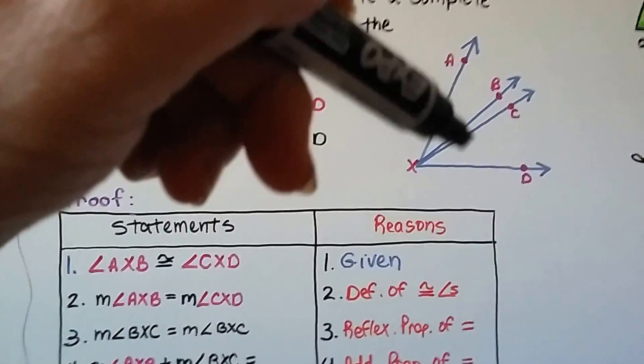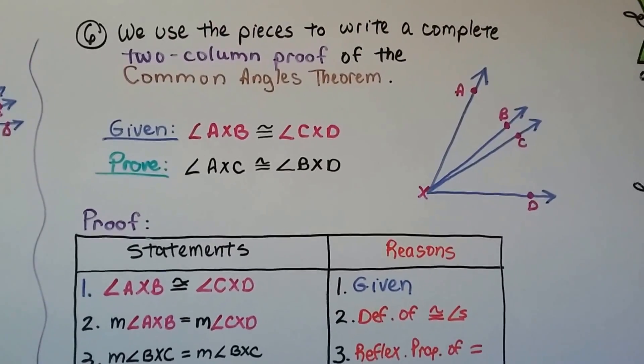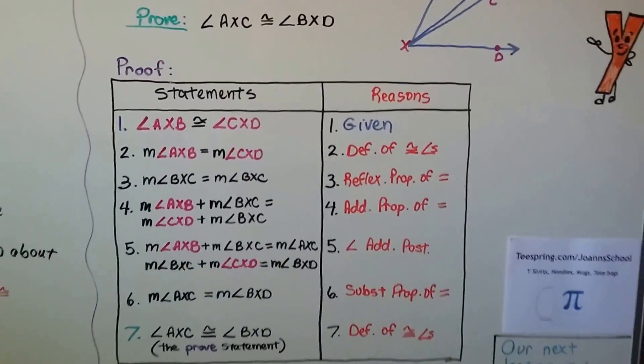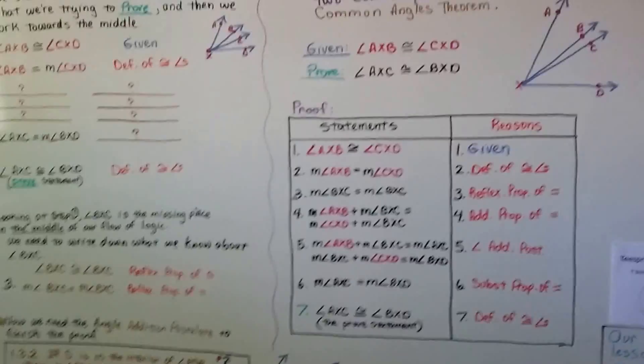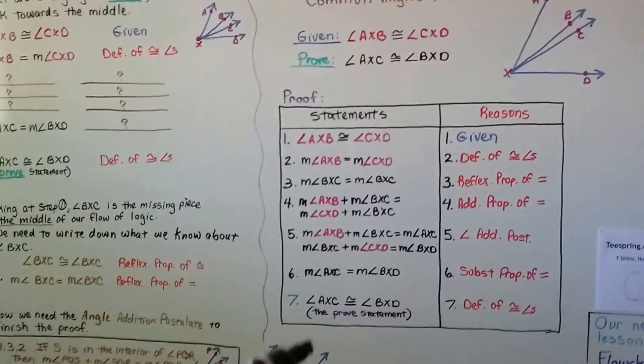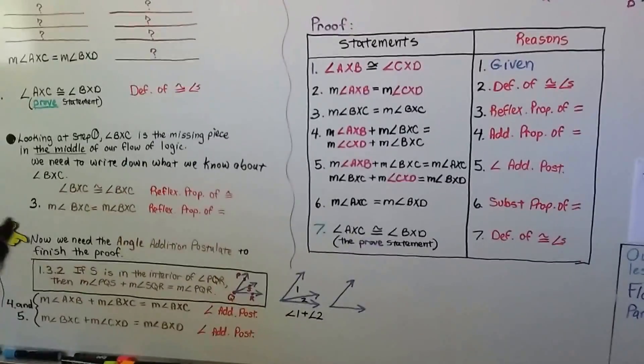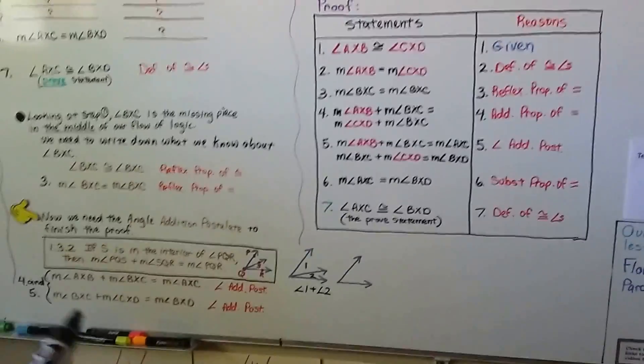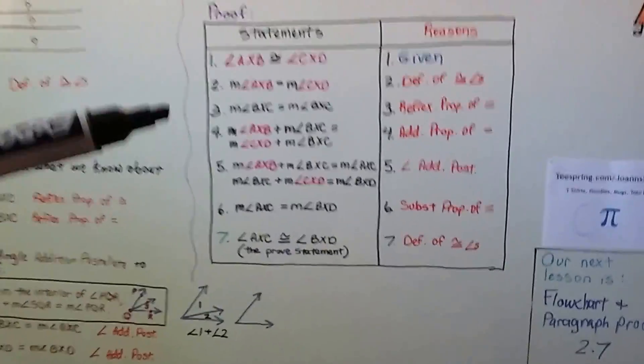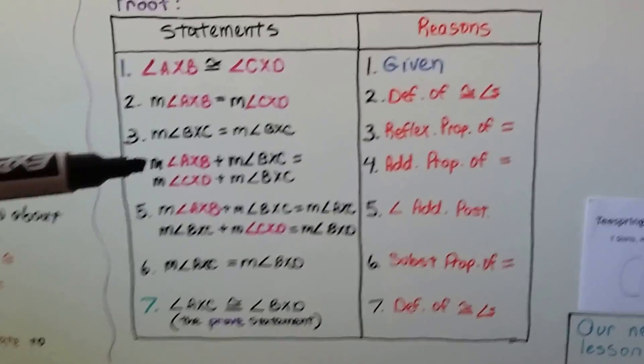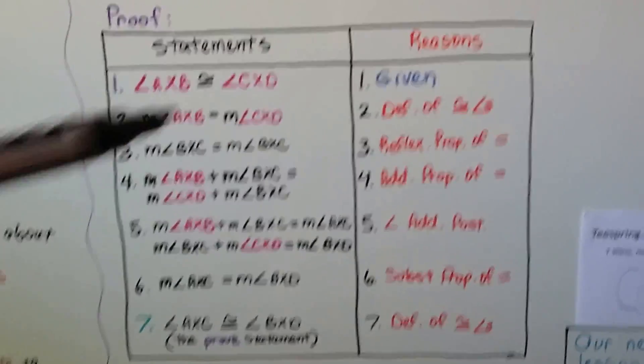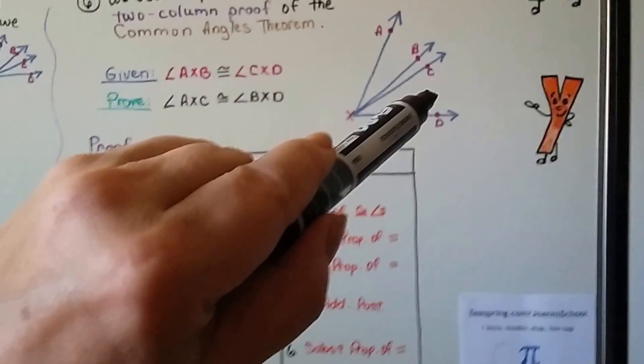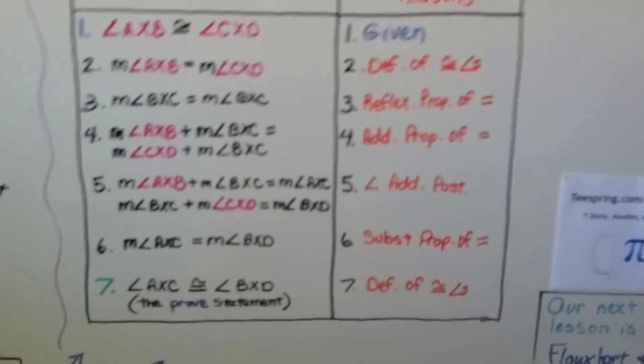So here we have our drawing again, right here. We have our given angle AXB is congruent to angle CXD. We need to prove that angle AXC is congruent to angle BXD. So we have our statements and our reasons. If you look at our plan, we have number 1, number 2, and part of number 6 and number 7. Then we had number 3 by figuring out the reflexive property of equality. We've got number 4 and 5 from using the angle addition postulate. It's saying that the measure of angle AXB plus the measure of angle BXC equals the measure of angle AXC. That's our angle addition postulate.